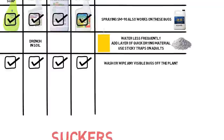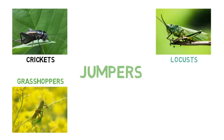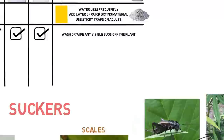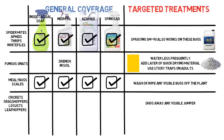Moving on to big bugs — starting with the jumpers: crickets, grasshoppers, locusts, and leafhoppers. While the first three eat chunks of leaves, leafhoppers suck sap out of leaves, leaving clusters of brown dots. These are all easily identifiable due to their size. If you can shoo them away from your grow space, that's the easiest fix. Otherwise, neem oil, Azamax, insecticidal soap, spinosad, or a combination of these will get rid of them.